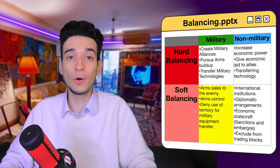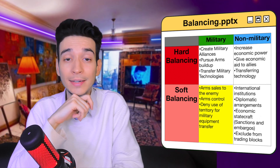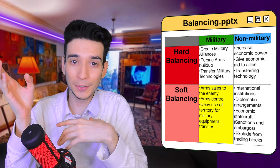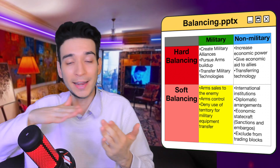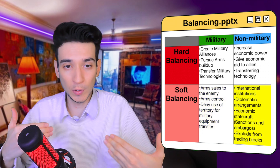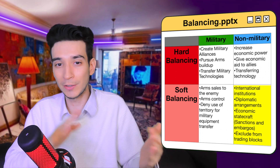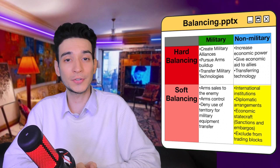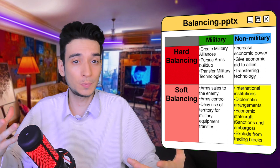Soft balancing, on the other hand, tries to weaken or undermine a rival's power. Militarily, it can include arms sales to an enemy of the rival country, pursuing arms control efforts targeting the rival, or denying the rival country use of territory for transferring military equipment like airplanes or tanks. Non-militarily, it can use international institutions, diplomatic arrangements, economic statecraft like sanctions and embargoes, or excluding the rival from trading blocs.